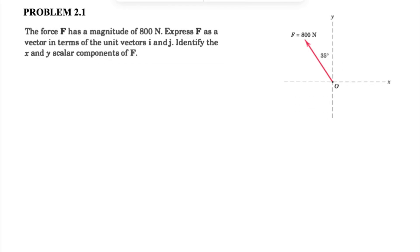Welcome to the channel. We're going to be solving the first question from the second chapter of the Merriam textbook engineering mechanics. We have the force F that has a magnitude of 800 newtons. We need to express force F as a vector in terms of the unit vectors i and j, and we need to identify the x and y scalar components of the force F.